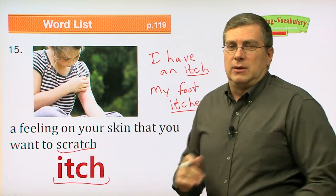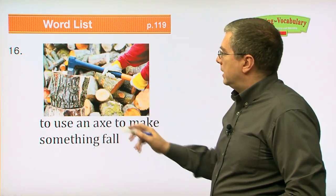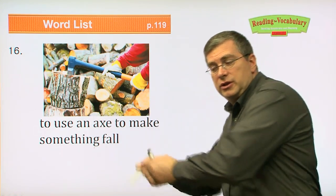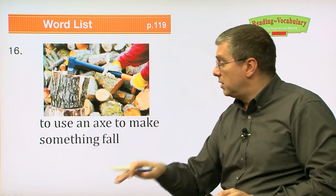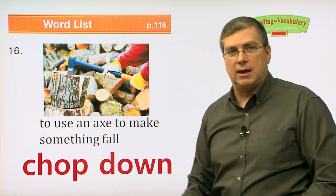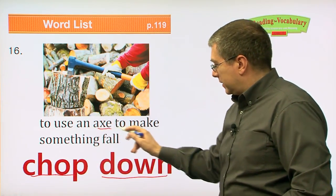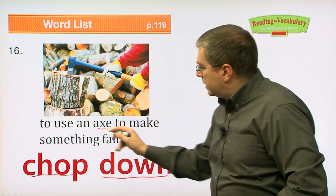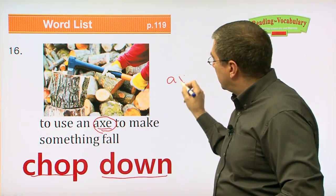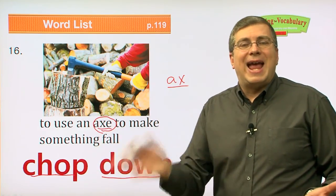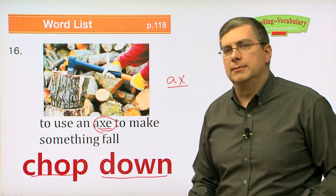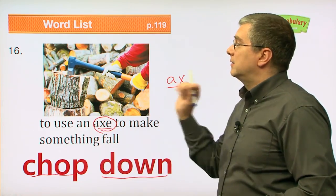Next one: to use an axe to make something fall. We talked about lumberjacks — a lumberjack usually uses an axe and they chop down trees. They hit the tree with the axe and the tree falls down. So 'chop down' means to use an axe to make something fall. By the way, you can spell it ax or axe — both spellings are acceptable in English. Don't be confused about that.